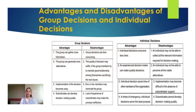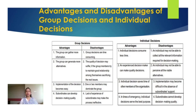Now let us discuss the advantages of group and individual decisions. For group decisions, advantages include: the group can gather more information, generate more alternatives, implementation of the decision becomes easier, and subordinates can develop decision making skills. For individual decisions, advantages include: it consumes less time, an experienced decision maker can make quality decisions, individual decisions save time for other members of the organization, and in times of emergency, individual decisions serve the best purpose.